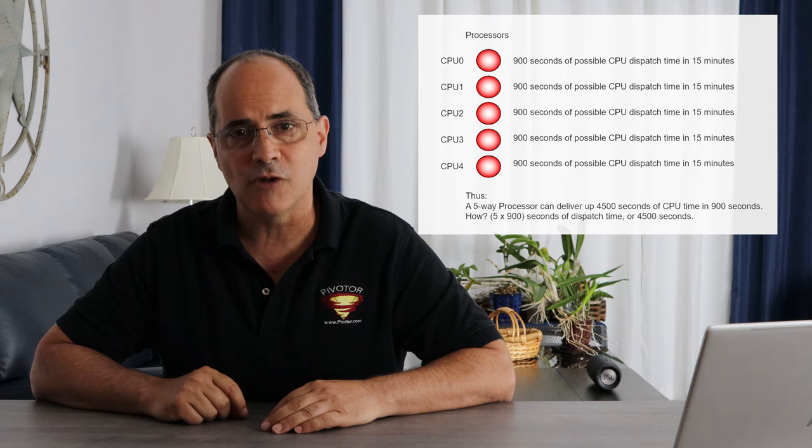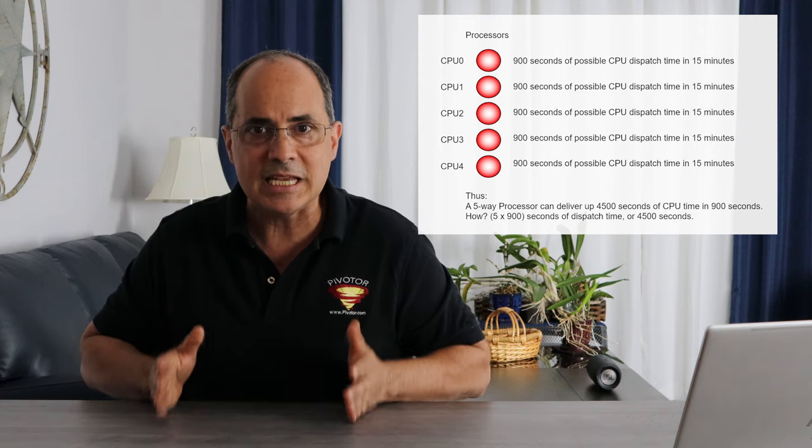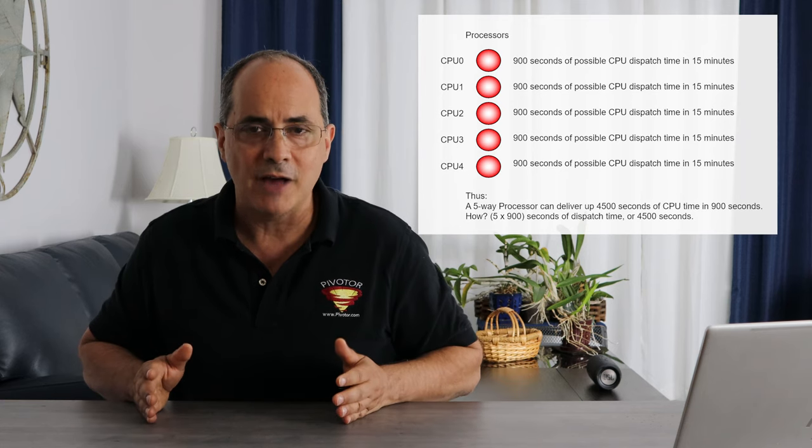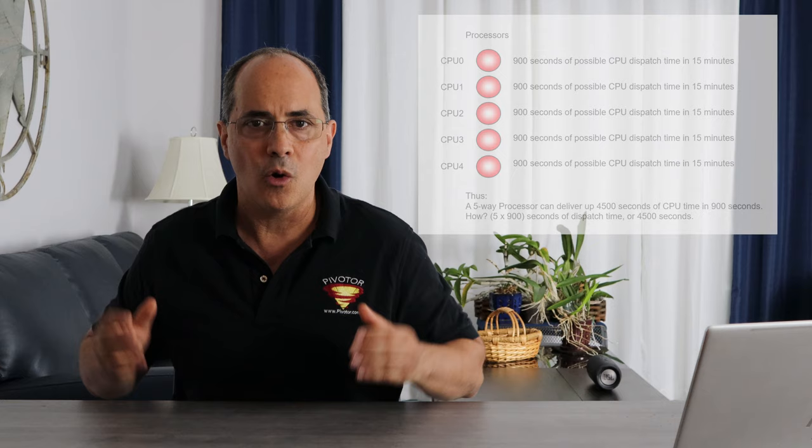What that 4,500 seconds represents is that in a 15-minute measurement interval, five CPUs can deliver 4,500 seconds of CPU time. Now we know the maximum amount of CPU time, and all other measurements will be in the context of that maximum. If you're interested in understanding more about how to calculate the maximum CPU time possible, I have another video about that — click in the references. That video also talks about dispatch time. So level one: how much CPU time is possible on the machine.